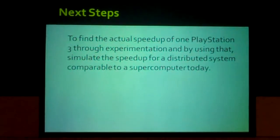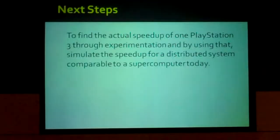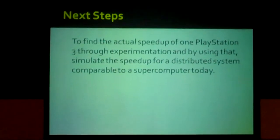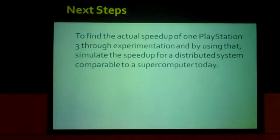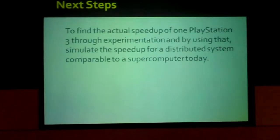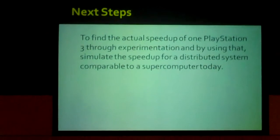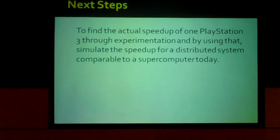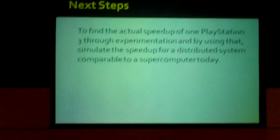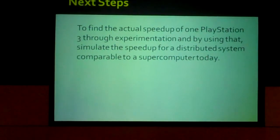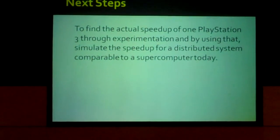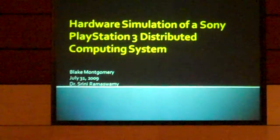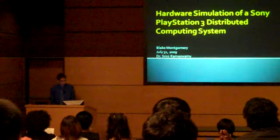And my next steps in this project are to find the actual speedup of one PlayStation 3 through experimentation. And by using that, I'll simulate the speedup for a distributed system that is comparable to a supercomputer today. The UALR supercomputer costs near $1 million, and it's estimated that a PlayStation 3 distributed system of the same capacity can be made for a quarter of that price. Thank you.